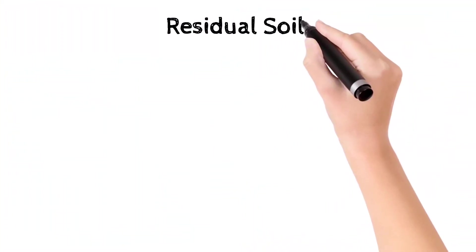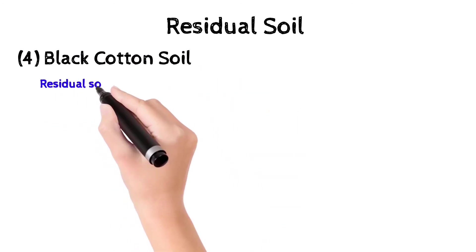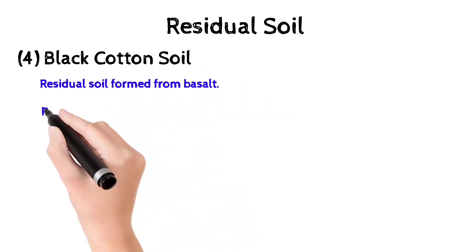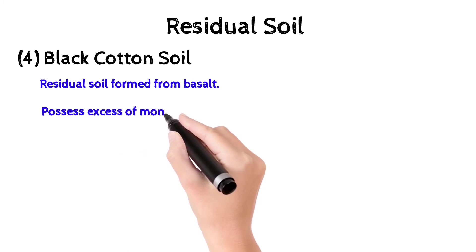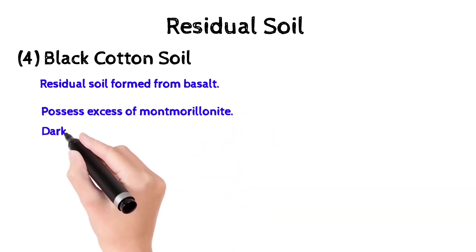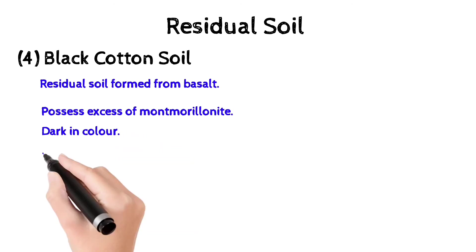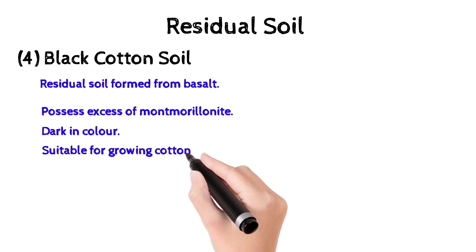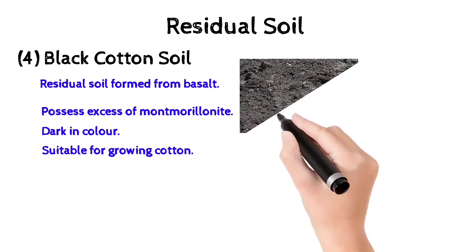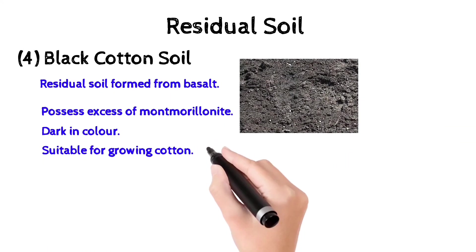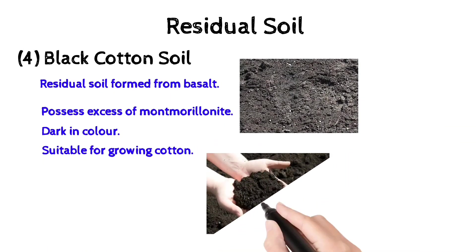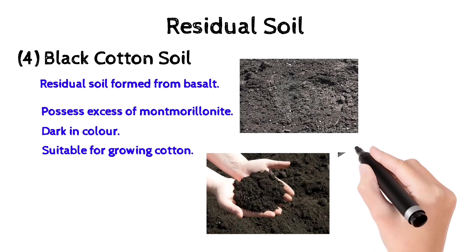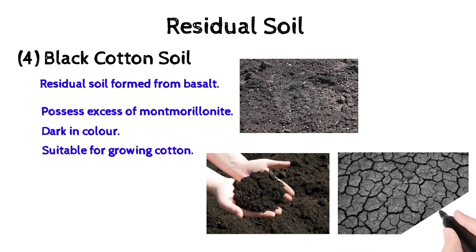The fourth classification of residual soil is black cotton soil. It is a residual soil formed from basalt, possesses excess of montmorillonite, is dark in color, and is very suitable for growing cotton — that's why it is called black cotton soil. Due to its higher percentage of montmorillonite, it shows highly swelling and shrinkage properties.